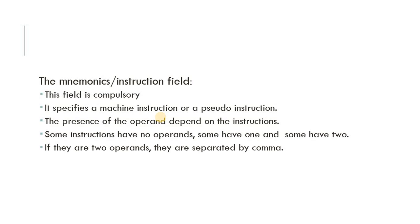The second field is the instruction field. This field is compulsory — it specifies a mnemonic or instruction, or a pseudo instruction. The presence of an operand depends on the instruction: some instructions have no operand, some have one, and some have two. The presence of operands depends on the type of instruction.